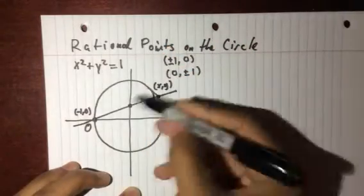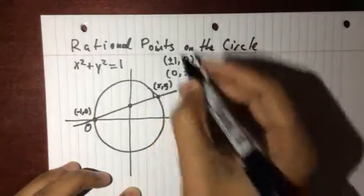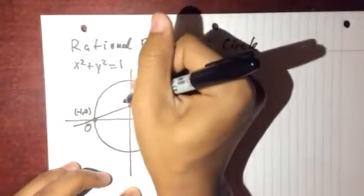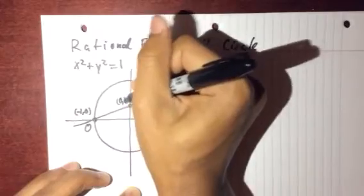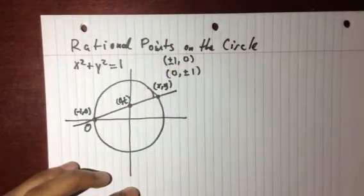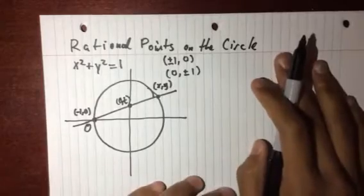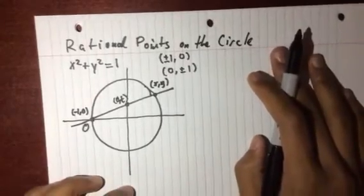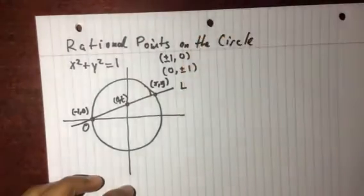So let that be like xy and then this point we'll call it zero t. We don't know yet if t is rational or not or even if xy is rational or not but we want them to be. So we'll call this line L.